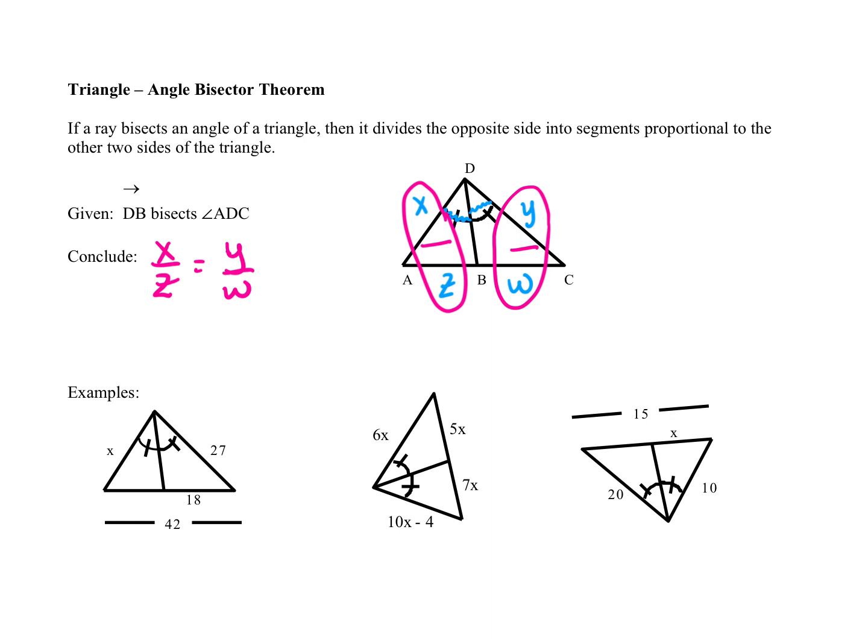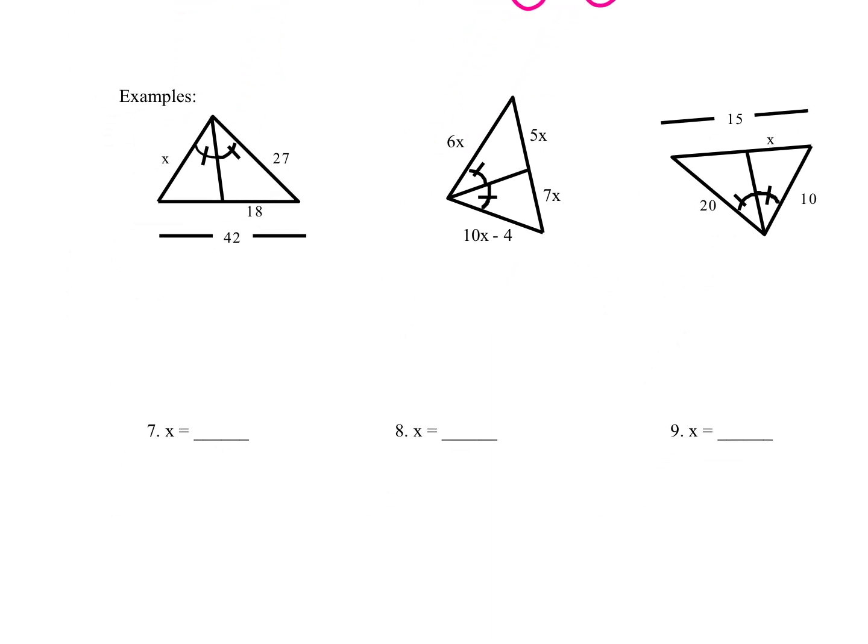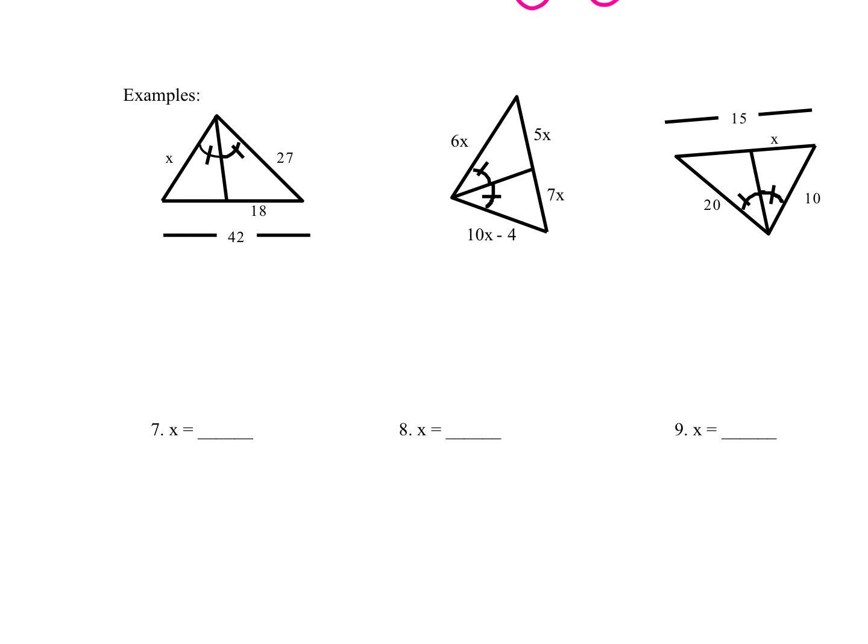So then if we look at example 7, we see that we have an angle bisector here at the top. So that means that I can do these two parts in a fraction equal these two parts in a fraction. So far I have X over something equals 27 over 18. So to figure out that something, I say since the whole side here is 42, I subtract 18 from that. And I end up seeing that this part of the triangle is 24. So that will go on the other part of my proportion that I don't have filled in yet. And so that means I can do 24 times 27 and divide by 18 to get that X is equal to 36.